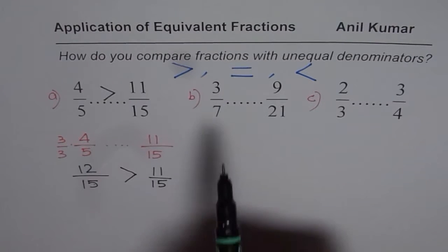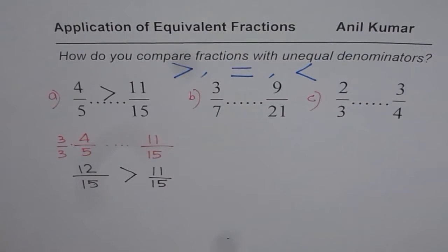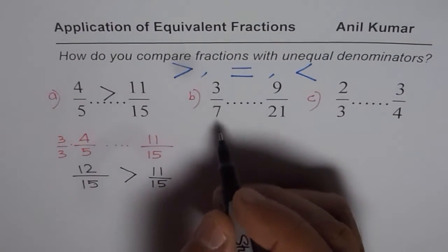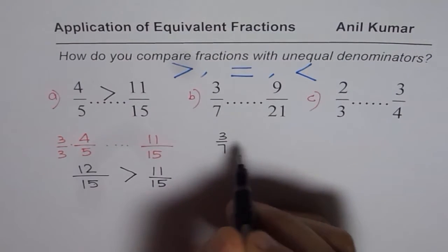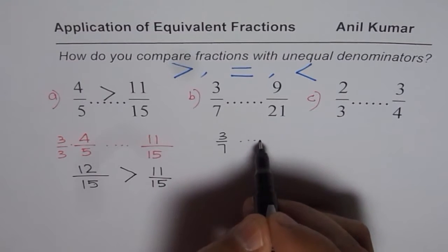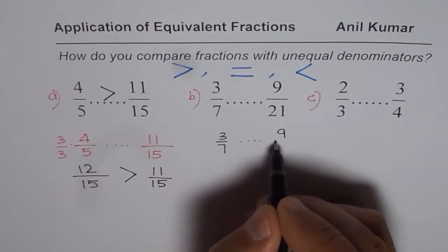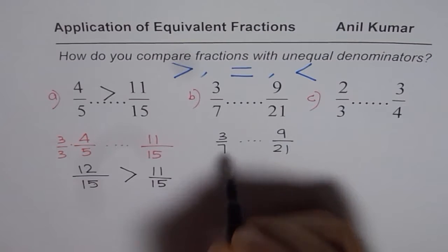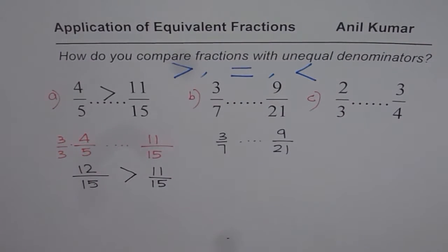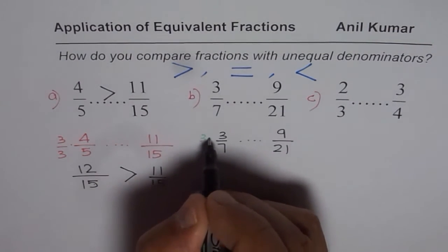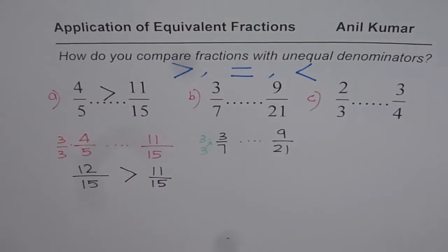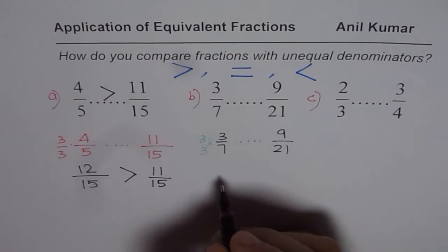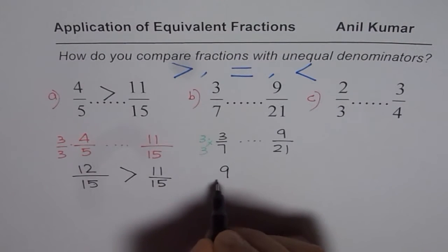This time the fractions are 3 over 7 and 9 over 21. How will you write 7 as 21? Well, for 3 over 7, we can write it with denominator 21, since 3 times 7 is 21. We multiply both numerator and denominator by 3. When you multiply both by 3, you get an equivalent fraction: 3 times 3 is 9, and 3 times 7 is 21.